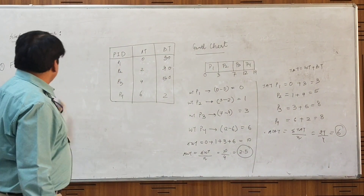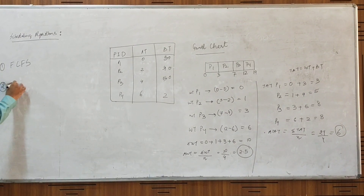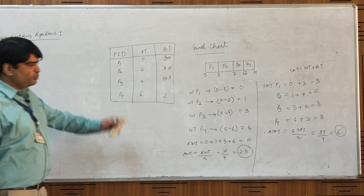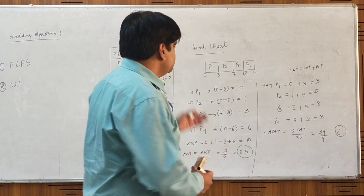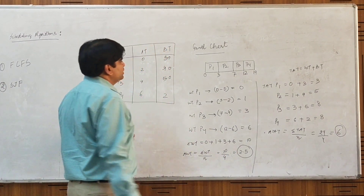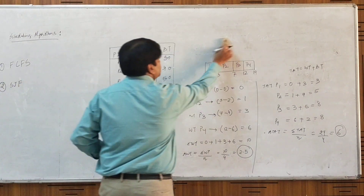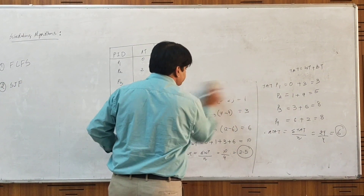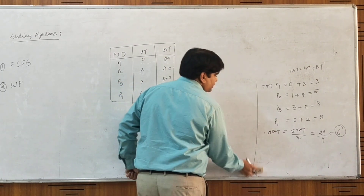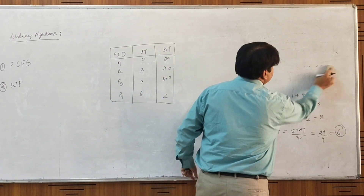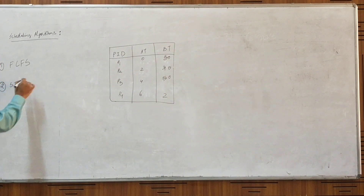This type of scheduling is known as non-preemptive scheduling. There are other scheduling algorithms as well. The major drawback of FCFS is that important processes cannot be executed first because priority does not matter — the process that requested the CPU first will get the CPU first. A second disadvantage is that it provides a very high average waiting time. We can overcome one of these problems by using another scheduling algorithm: the SJF, or Shortest Job First, scheduling algorithm.